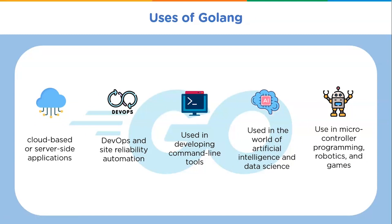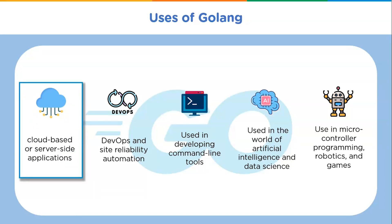Go was originally built for programs related to networking and infrastructure, intended to replace popular high-performance server-side languages like Java and C++. Golang's support for concurrency makes it an excellent choice for handling bottlenecks that prevent scalability. Today, Go is used for a variety of applications and is popular for cloud-based or server-side applications. Its concurrency, networking features, and high portability across platforms make it exceptional for cloud computing.